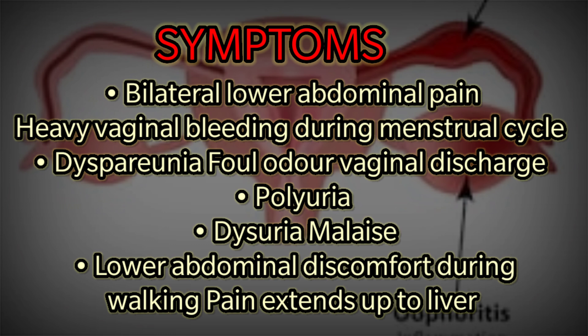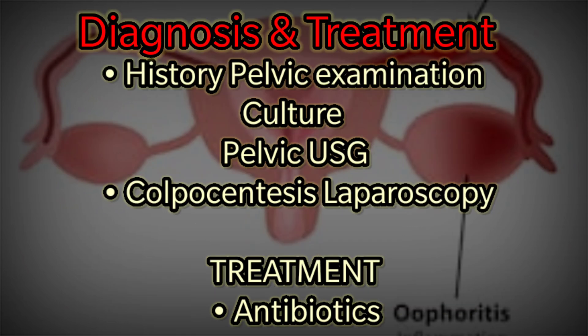Symptoms include bilateral lower abdominal pain, heavy vaginal bleeding during the menstrual cycle, dyspareunia, foul odor vaginal discharge, polyuria, dysuria, malaise, lower abdominal discomfort during walking, and pain extending up to the liver. Diagnosis involves history, pelvic examination, culture, pelvic ultrasound, colpocentesis, and laparoscopy.